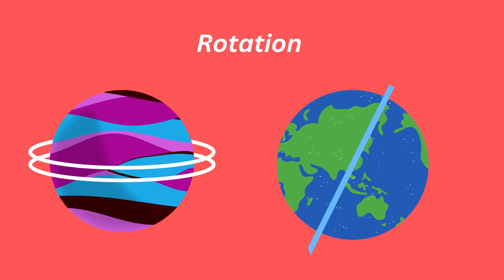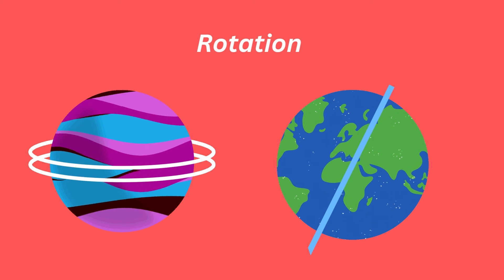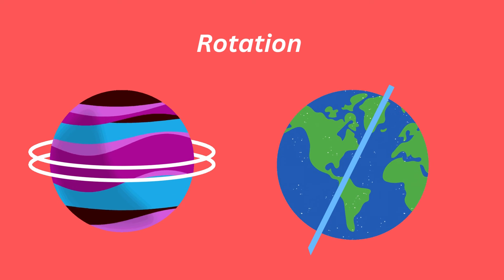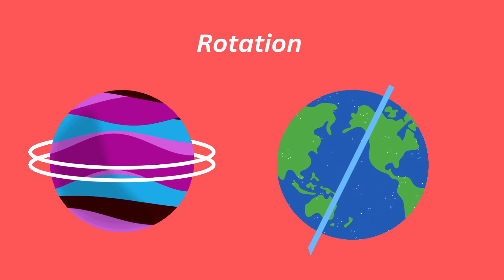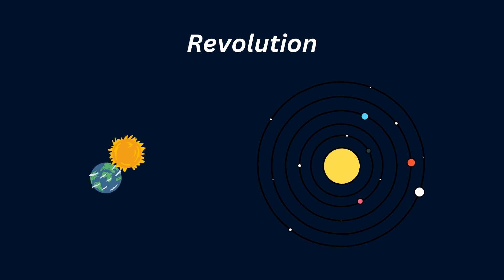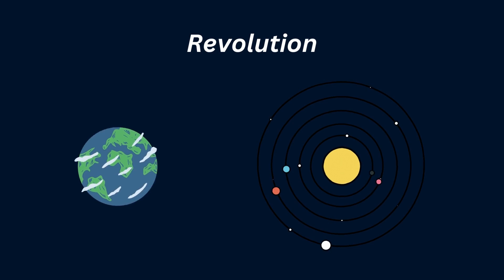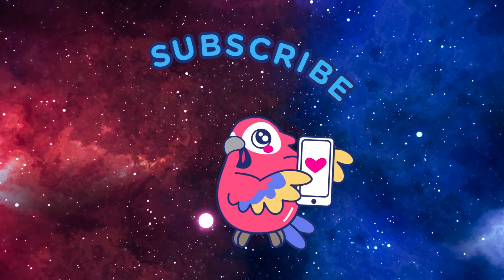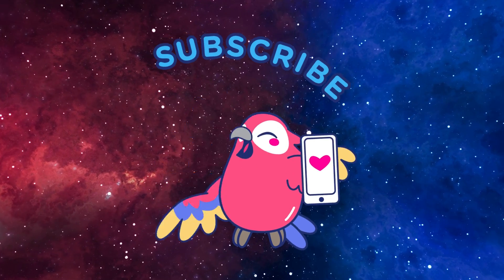The Earth and other planets rotate around an imaginary line called the rotation axis. Since this axis passes through the Earth's center, the Earth is said to spin or rotate upon itself. Revolution is the movement around an object in a particular path — the Earth's movement around the sun is called a revolution. Hope you learned something interesting today!